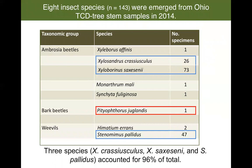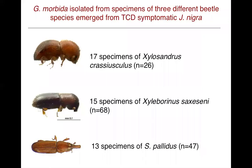From the rearing, what we found was again a number of ambrosia beetles, including those from our previous study — Xylosandrus crassiusculus and Xyloborhinus saxinii. We did collect some walnut twig beetles from these symptomatic trees and also Stenomimus pallidus. Three species — Xylosandrus crassiusculus, Xyloborhinus saxinii, and Stenomimus pallidus — accounted for about 96% of the total beetles that emerged from these branch and stem samples.